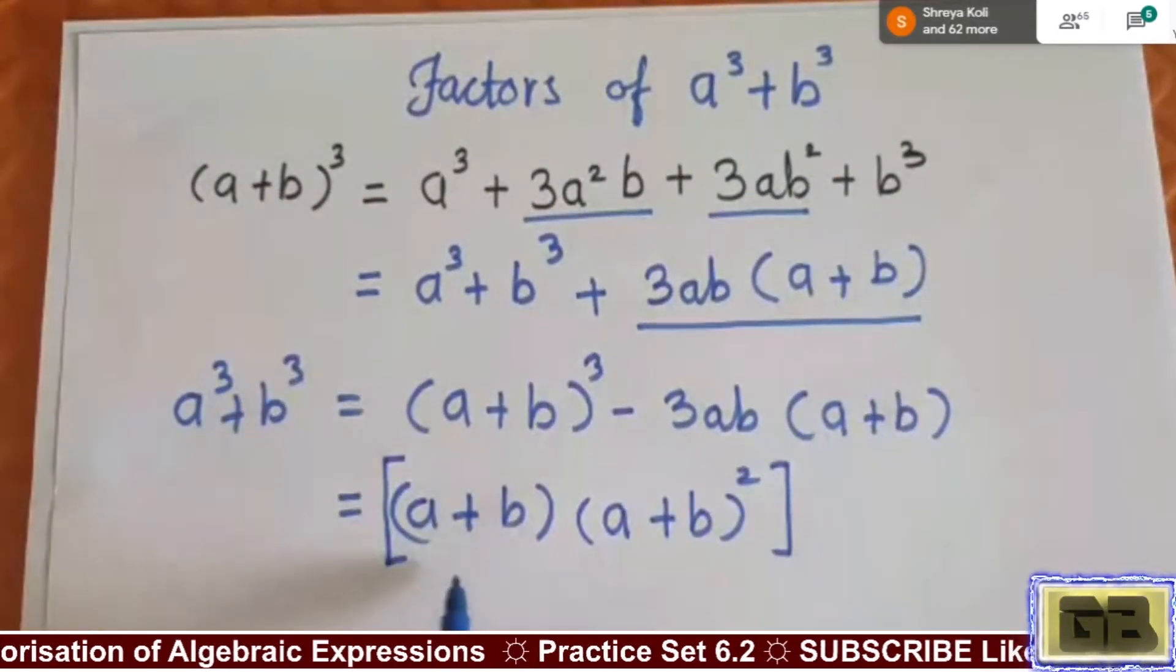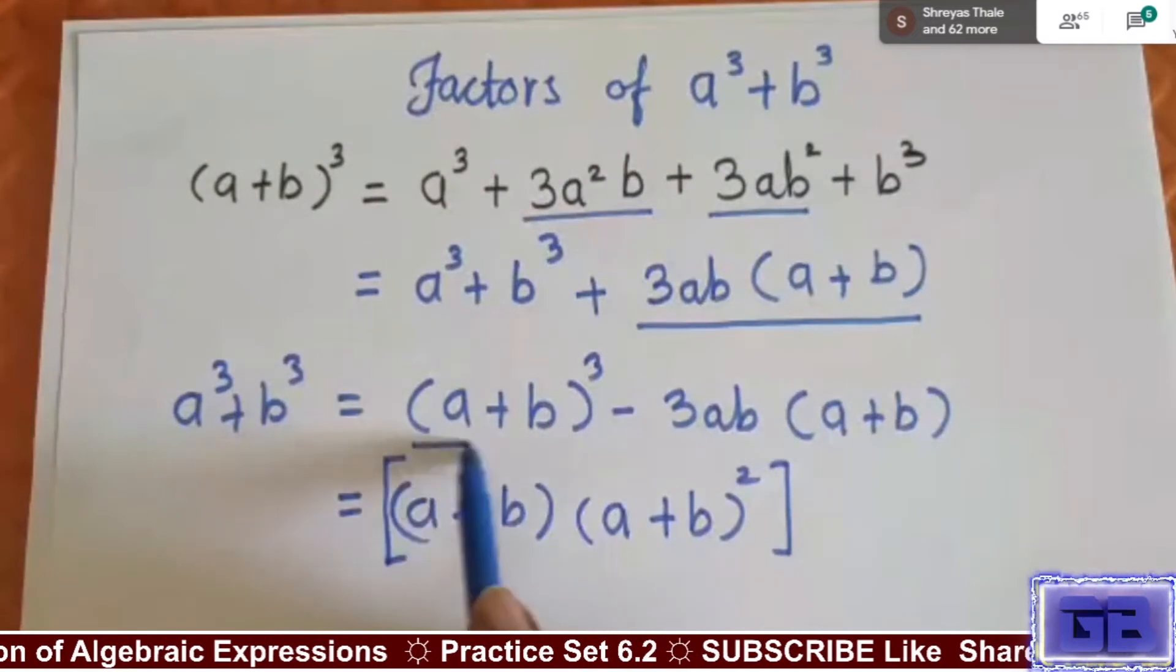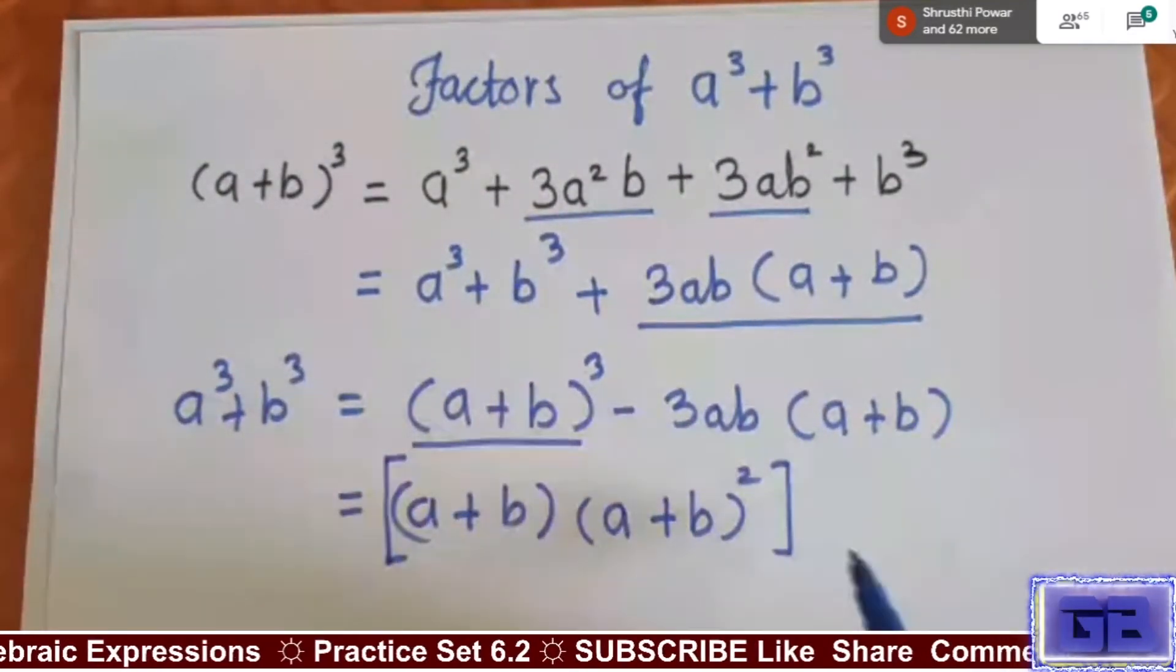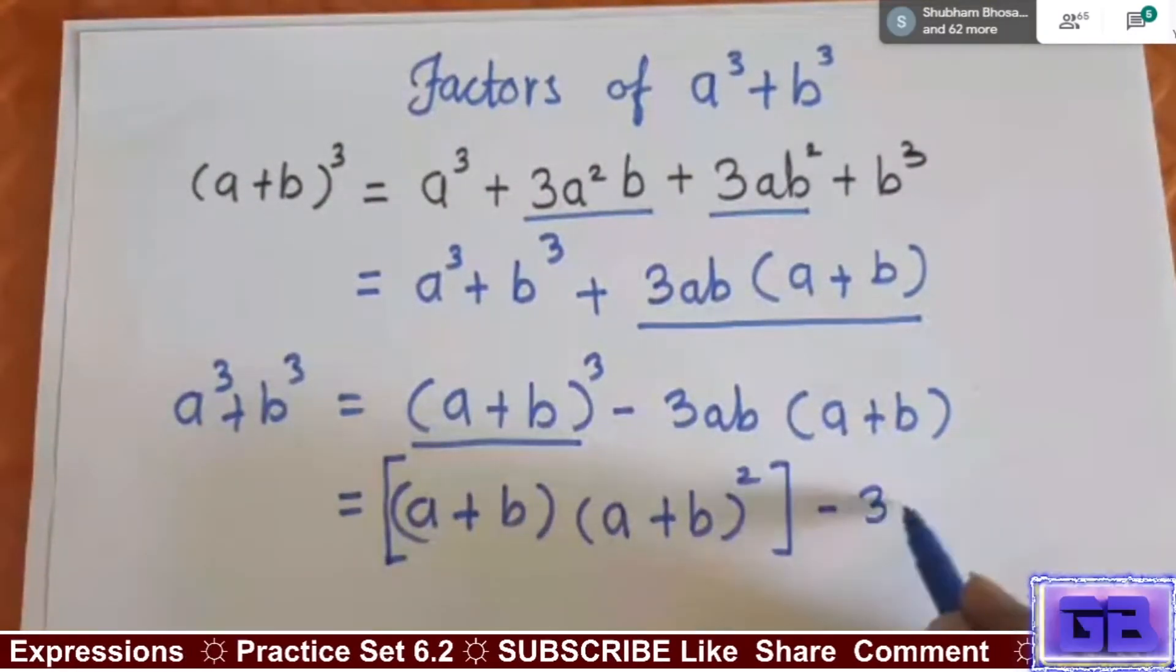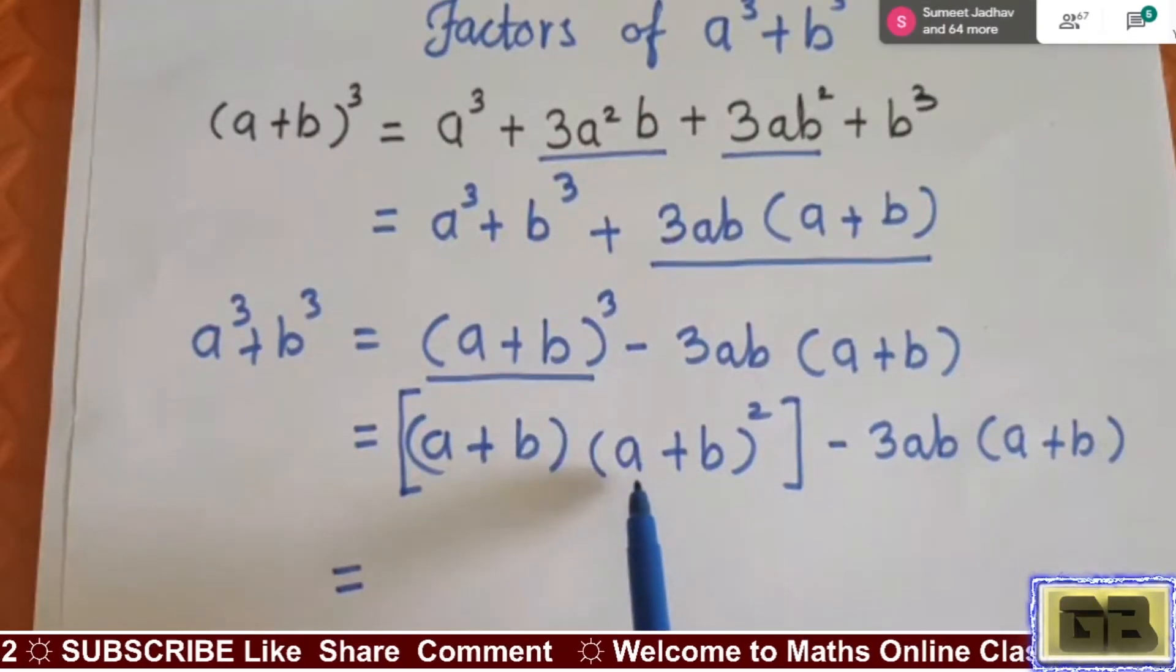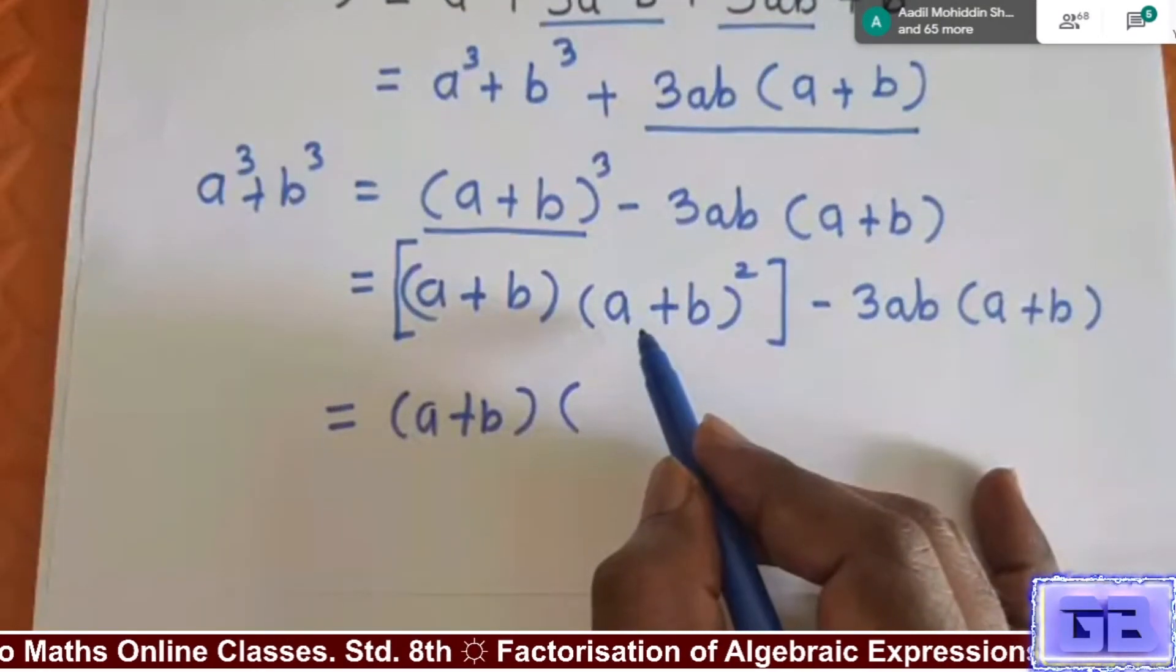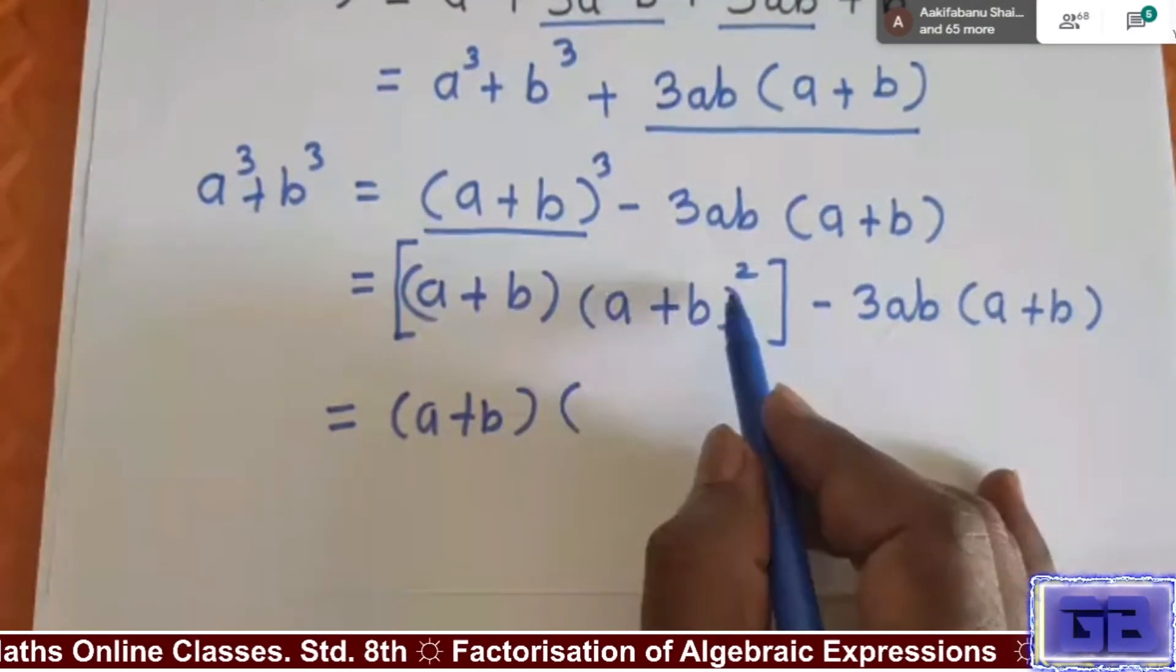This is the expansion of (a+b)³. This remaining term we will write down as it is: minus 3ab in bracket (a+b). We have learned this formula, expansion formula. (a+b)². What is the expansion formula of this (a+b)²?